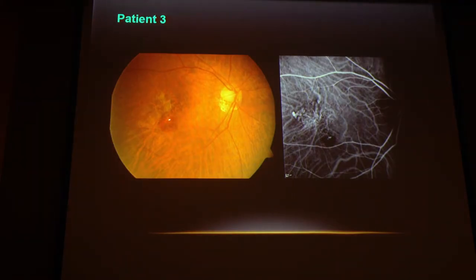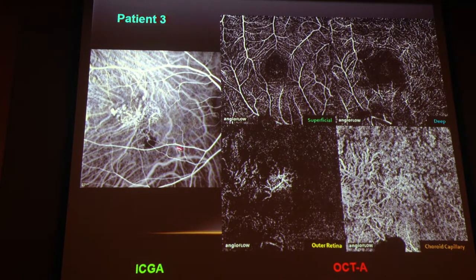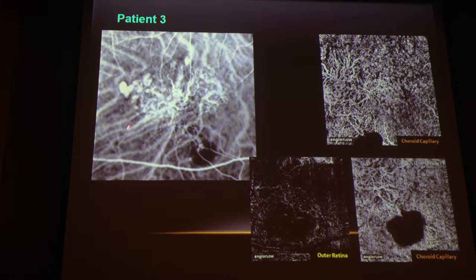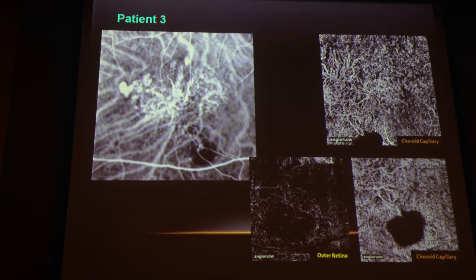Here's a third patient with a hemorrhagic pigment epithelium detachment and some irregular pigmentation. The ICG angiogram shows polyps as well as the BVN. We can see the BVN very clearly on the deeper layers — the outer retina and choriocapillaris. However, when we try to look for the polyps, we don't see them. On ICG we can see a hyperfluorescent nodule — I'm quite convinced it's a polyp — but on the corresponding OCTA image, we just see a hollow area. Could we confidently tell it's a polyp with only the OCT angiogram? I don't think so. That's a current limitation.